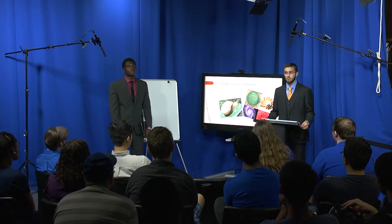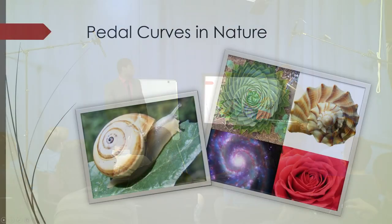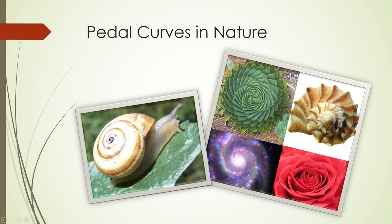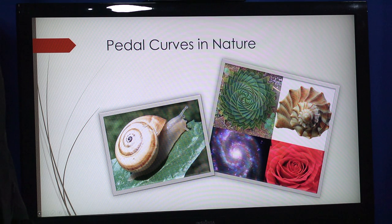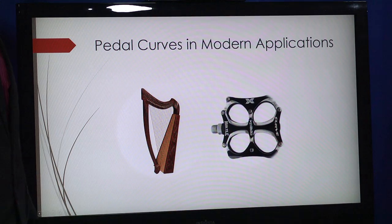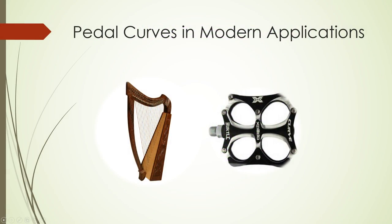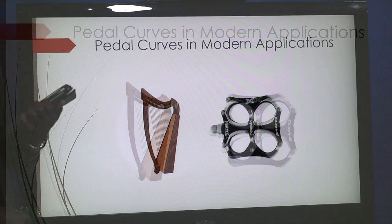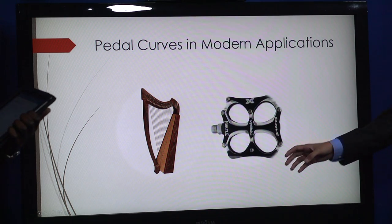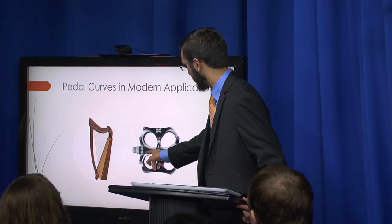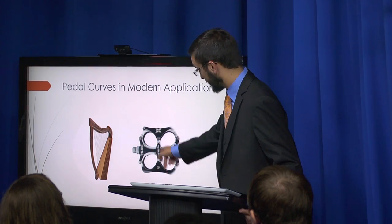Here are some of nature's pedal curves. You can see the snail — what the limaçon is named after — along with shells, other shells, flowers, and galaxies. Here are some modern applications, one of which is the harp. You can see curves based off the overall shape, and it also creates a pattern like four petals of a flower.